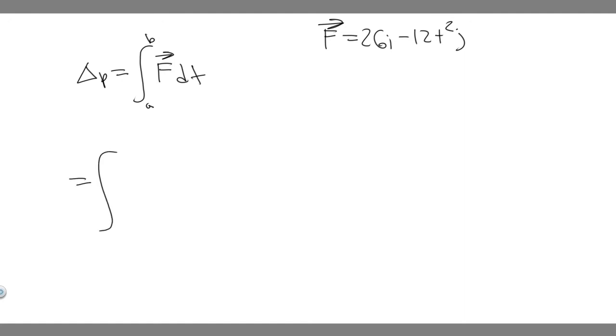If we go ahead and solve this, it's going to be the integral from a, which is one, to two, because we're going from one to two seconds, of F, which is 26i minus 12t squared j times dt.